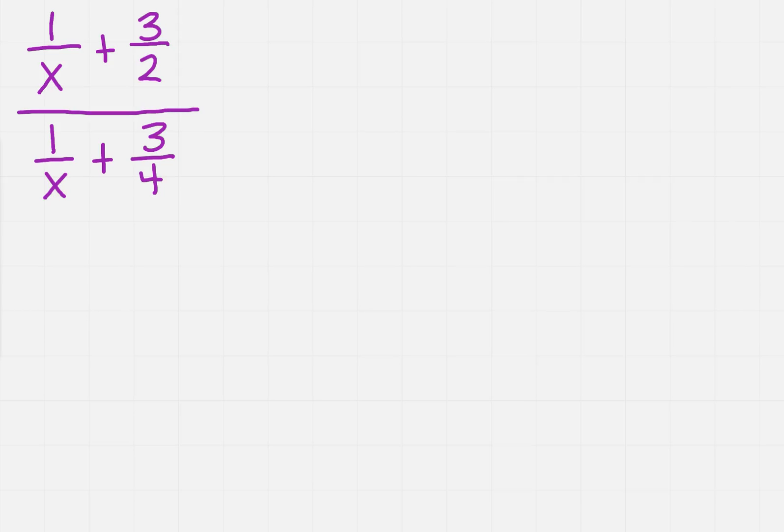I want to simplify this complex rational expression, and what makes it complex is there are fractions on top and there are fractions on the bottom. There's a number of ways to do this, but for most students it's easier if we work at the top first, the numerator, like it's one set, and then we look at the denominator.